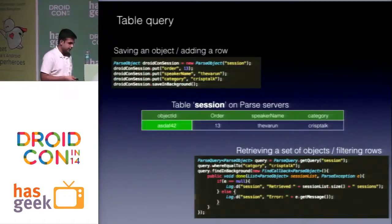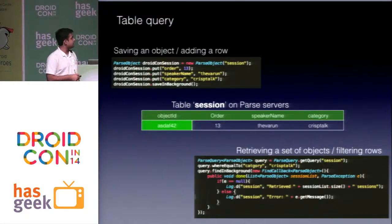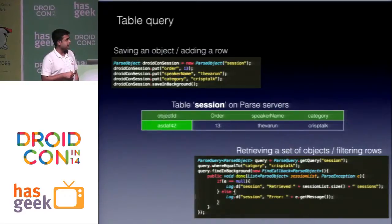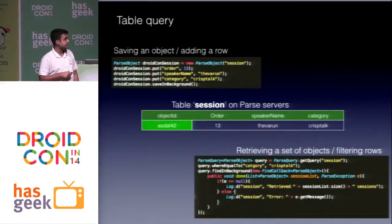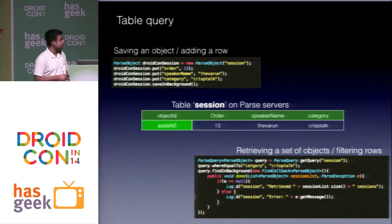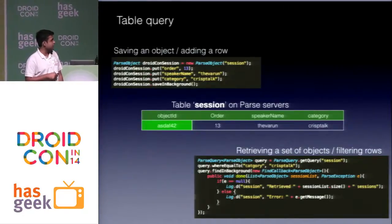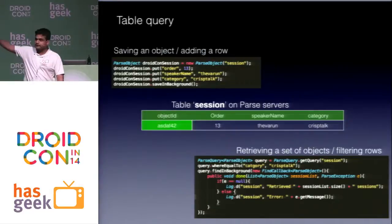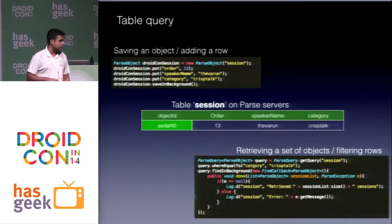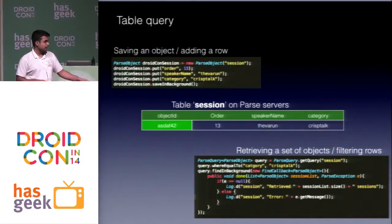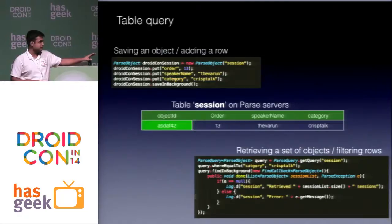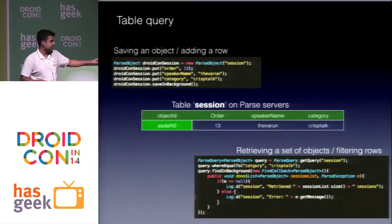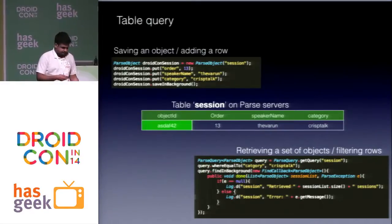To make a table and query data, you create an object of type ParseObject with the table name as a parameter. For example, building a DroidCon app, you'd call it 'session', define columns like order = 13, speaker name, and category, then call saveInBackground() — it will automatically ping the Parse servers and save the object. To retrieve data, you define a query filtering the 'session' table where category equals a specific value, then call findInBackground(), which returns the entire dataset matching that query.